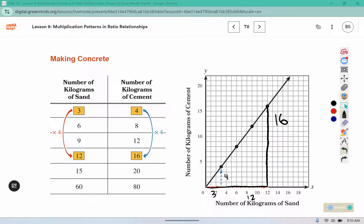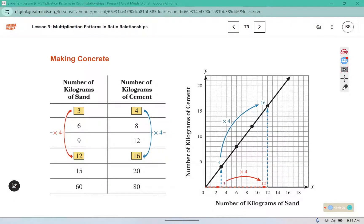Where do you see those values represented in the table? You can see that in both they multiplied by 4. On the red line 3 times 4 is 12, and for the blue line 4 times 4 is 16.